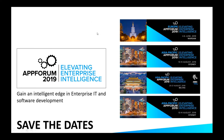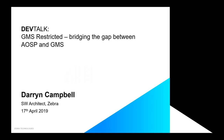We're going to cover GMS Restricted today. This is a brand new feature which is starting to get rolled out onto Zebra mobile computers. Just to set the terminology: GMS stands for Google Mobile Services. These are the additional applications and services which Google adds to Android — for example, the Play Store, Chrome, Maps, services like enhanced location and device attestation.